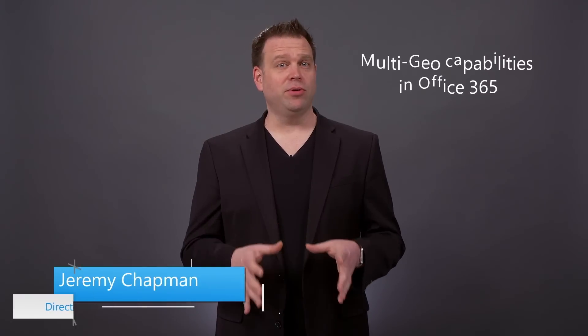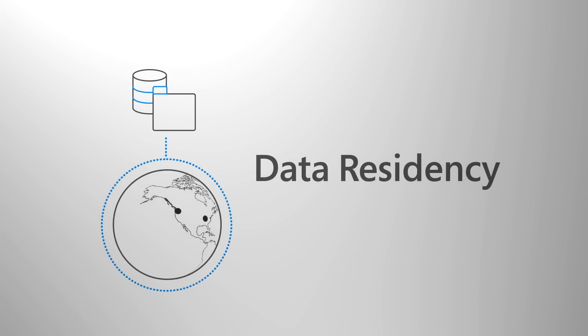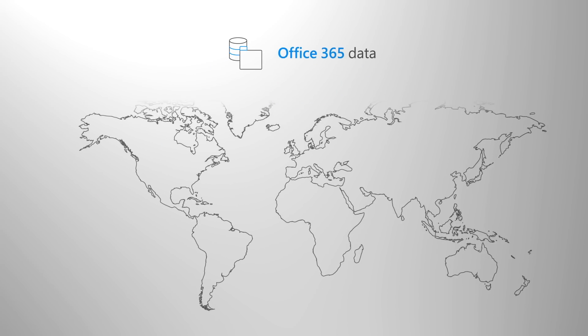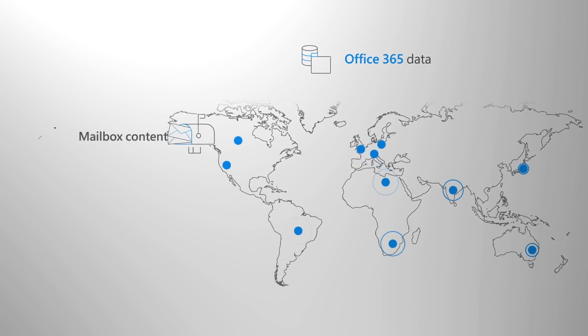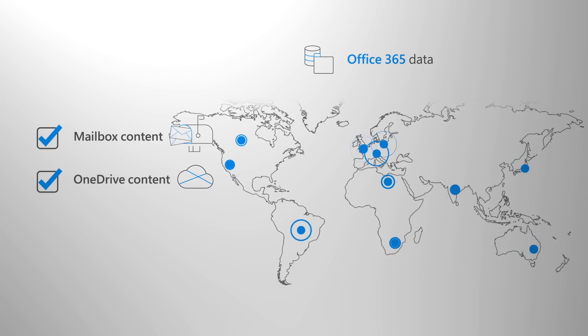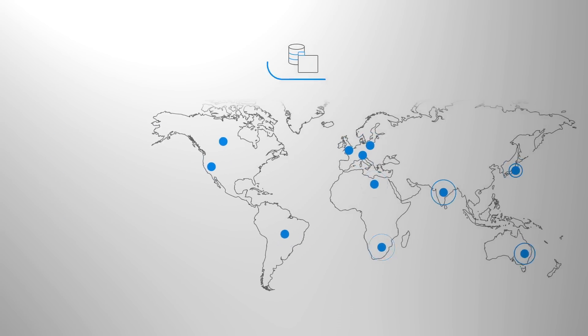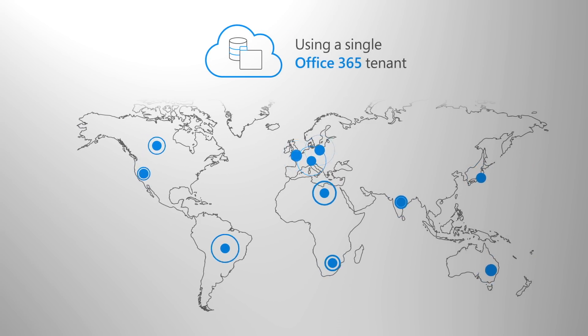Welcome to Office Essentials. If your organization is subject to requirements around where your data is stored, in the next few minutes I'll walk you through multi-geo capabilities in Office 365. Multi-geo is about data residency. You can control where your Office 365 data resides at rest on a per-user basis for your mailbox and OneDrive content, or determine where you want to locate your shared resources like SharePoint sites based on where you need your data to be, all using a single Office 365 tenant.